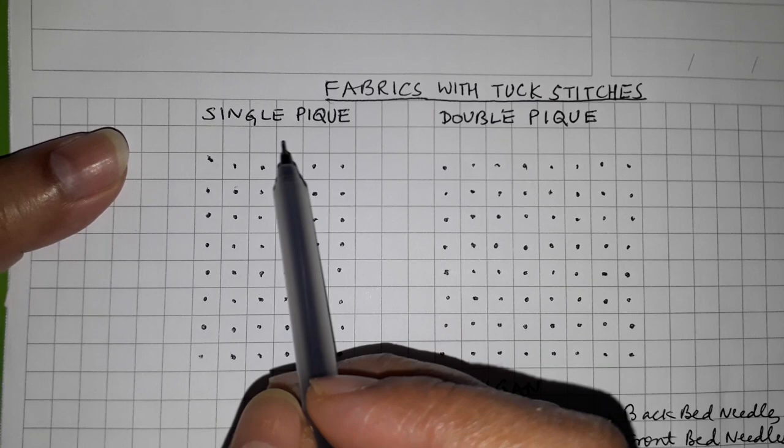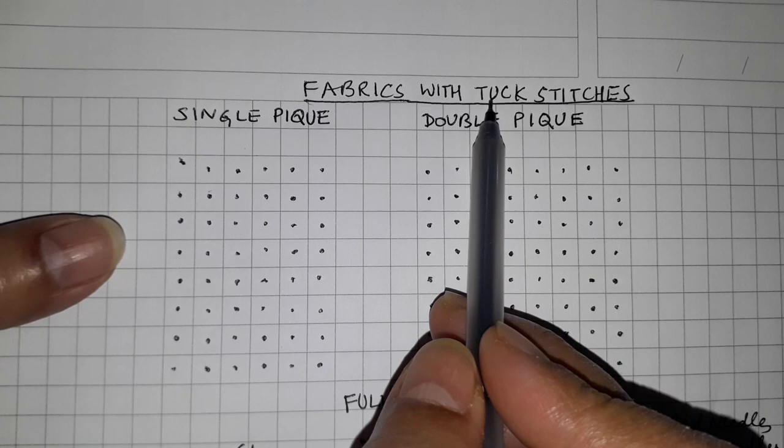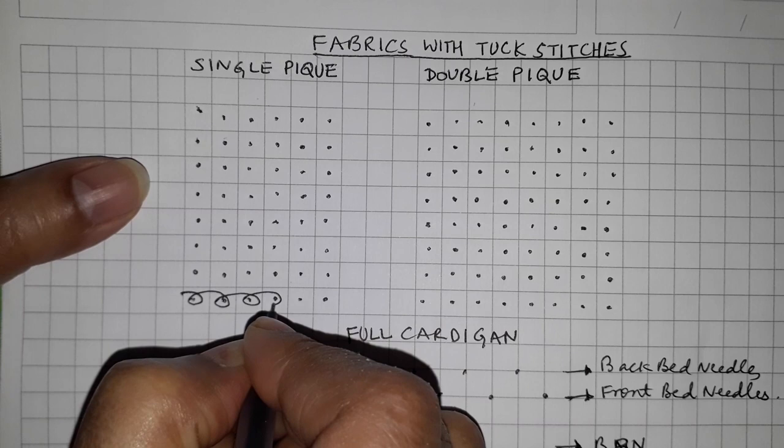Brands like Benetton and polo t-shirts use these. Let's have a look at the stitch notations for a single piqué. You have two types: single piqué and double piqué. Both these fabrics use tuck stitches. The first course is all knit stitches.